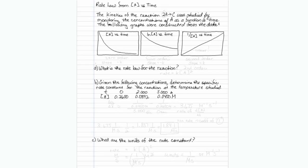So we get this data, and then we plot the data three different ways. A versus time, that is for a zero order reaction. Natural log of A versus time, that is for a first order reaction. And 1 over A versus time, that is for a second order reaction.